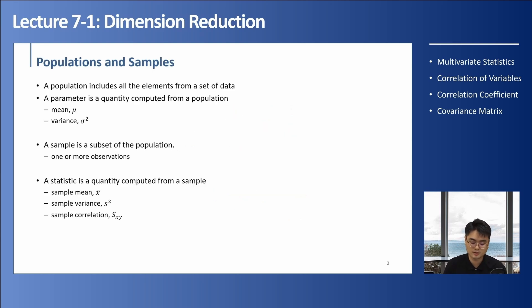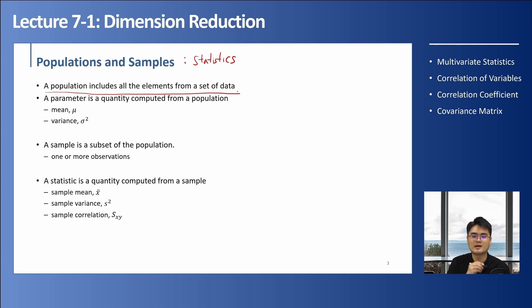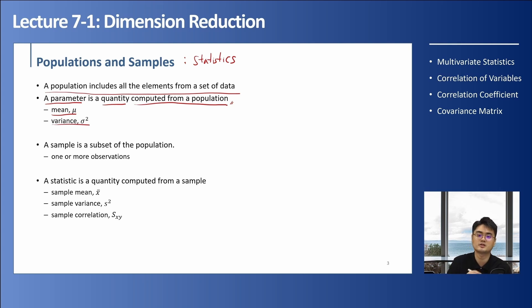Let's learn about populations and samples. A population includes all the elements from a set of data — it's the entire dataset. From the population we calculate parameters, where a parameter is a quantity computed from a population, such as mean, variance, and so on. If we calculate statistics from the entire population, we call these parameters.